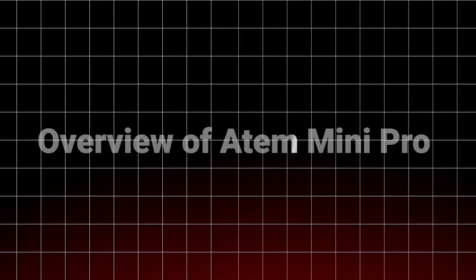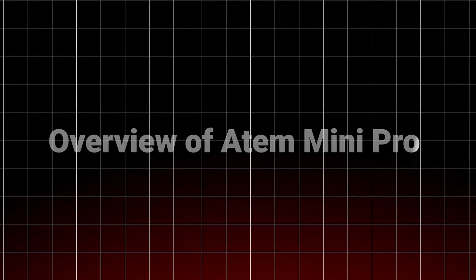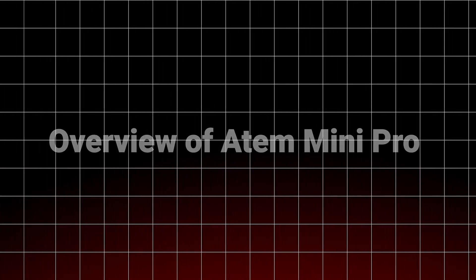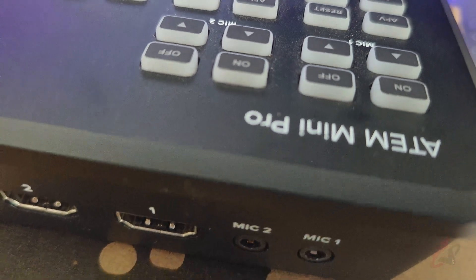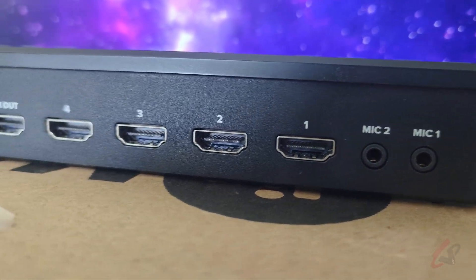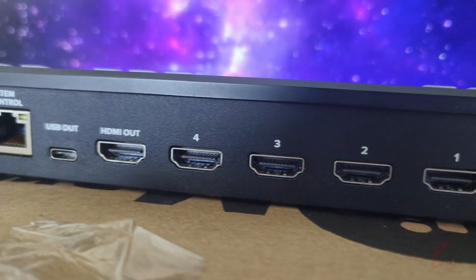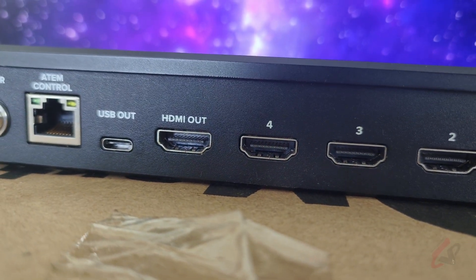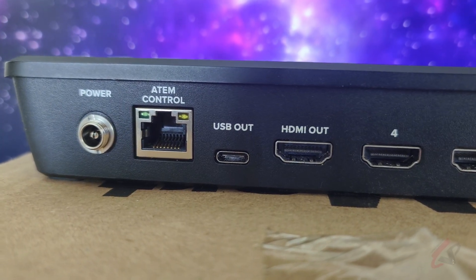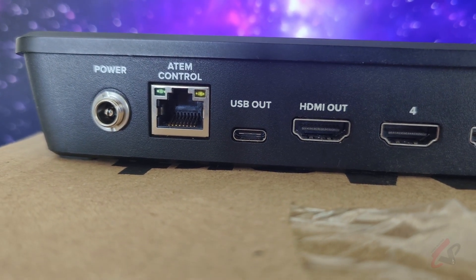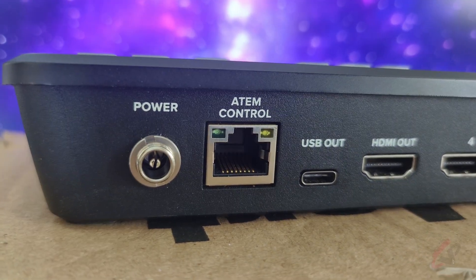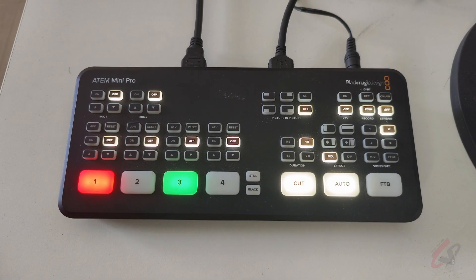Welcome to Video Doctor. In this video we're going to see an overview of the ATEM Mini Pro. Looking at the peripherals, we have two microphone inputs, four HDMI inputs, and one HDMI output — which you can use for multi-view or program output. There is also USB-C for recording, webcam output, or software control, and Ethernet specifically designed for software control, plus the power connector.